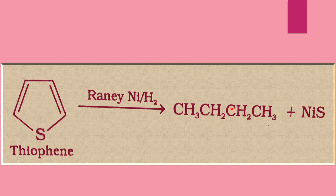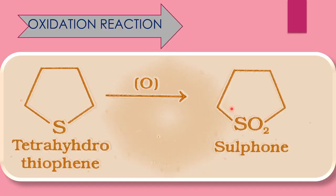These are the reduction reactions for thiophene. The next reaction is oxidation reaction. Thiophene is not oxidized, but tetrahydrothiophene gets oxidized to sulfone. Tetrahydrothiophene has CH₂CH₂CH₂ groups. It is oxidized and O₂ is added to the sulfur position — its name is sulfone. This addition of oxygen means oxidation reaction takes place.